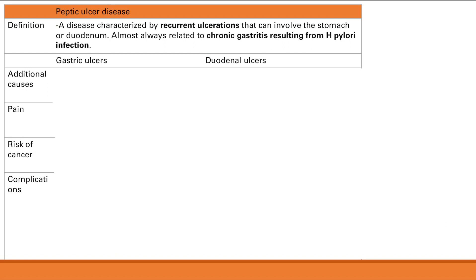We're going to differentiate into gastric and duodenal ulcers. H. pylori is the most common cause, but additional causes for gastric ulcers include NSAIDs, which decrease all the stomach defenses. For duodenal ulcers, we have Zollinger-Ellison syndrome, caused by a gastrin-secreting neuroendocrine tumor in the pancreas, which causes a lot of H+ production.